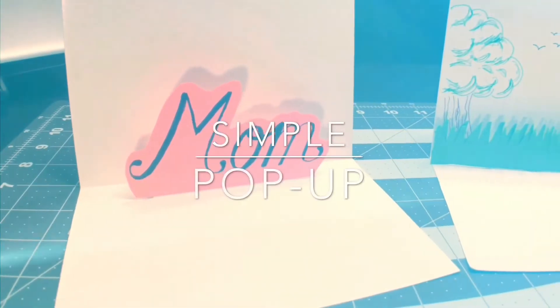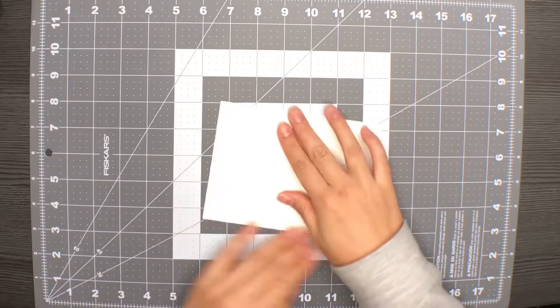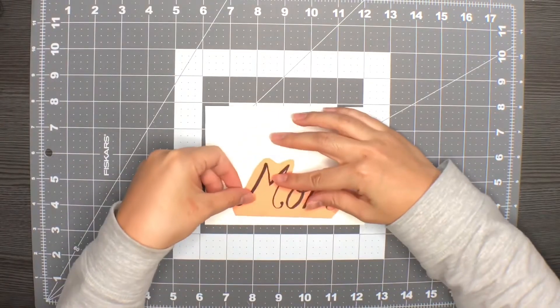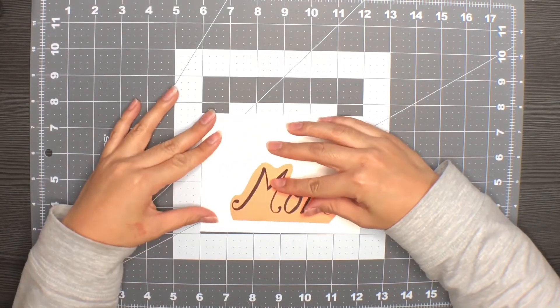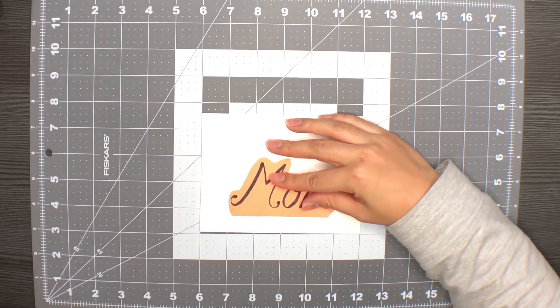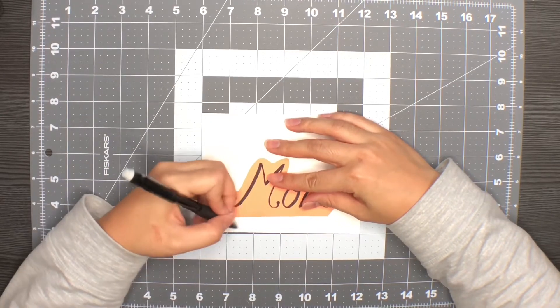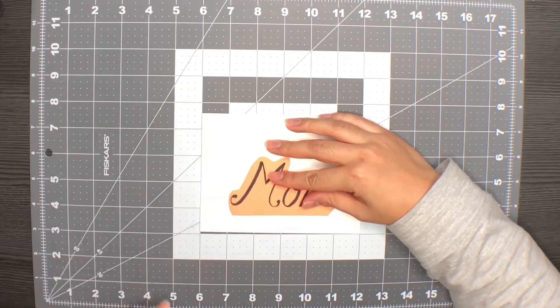Simple pop-up number one. We're starting with the crease of the card facing down and we're going to use our insert or image, in this case the word mom, as a guide for where we're going to make our cuts.